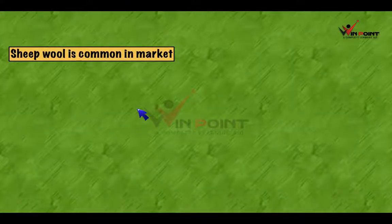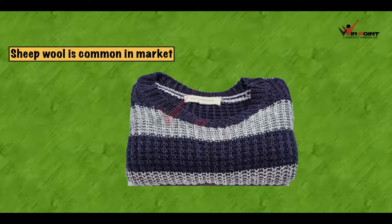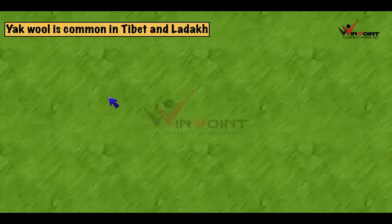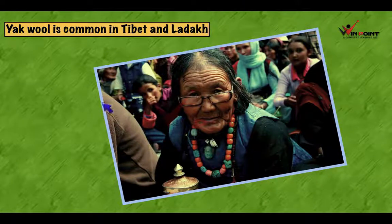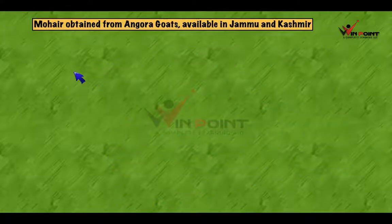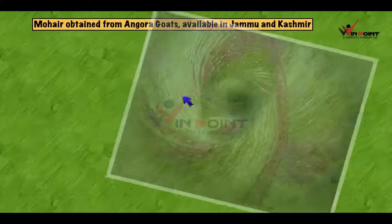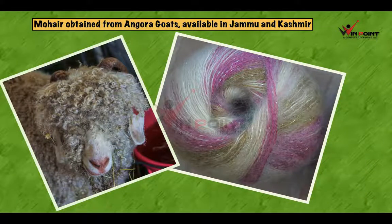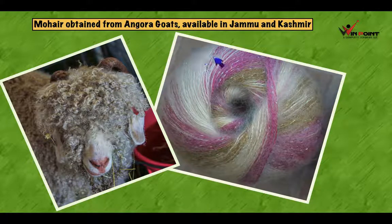Sheep wool is common in market. This is a cloth which is made up of sheep wool. Yak wool is common in Tibet and Ladakh. Mohair is obtained from Angora goat, available in Jammu and Kashmir. From this Angora goat, we are making mohair.